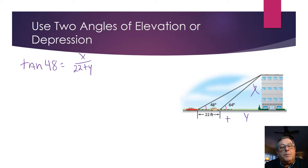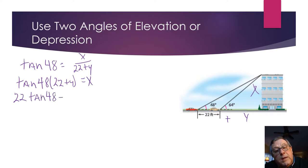Let's multiply both sides of this by 22 plus Y. And then I've got the tangent of 48 times 22 plus Y equals X. But remember, we set X equal to Y times the tangent of 64. We're going to substitute that in a minute. Let's go ahead and distribute the tangent of 48 to 22 plus Y. So we've got 22 times the tangent of 48 plus Y times the tangent of 48.